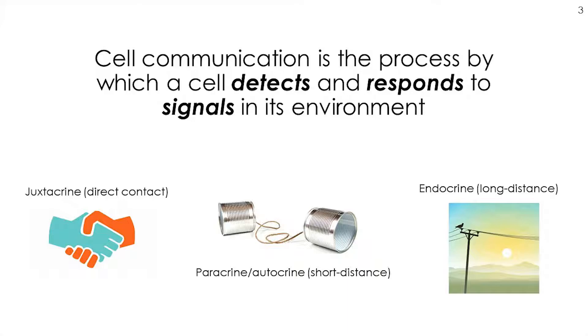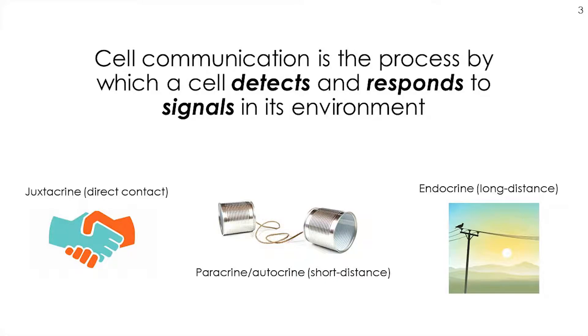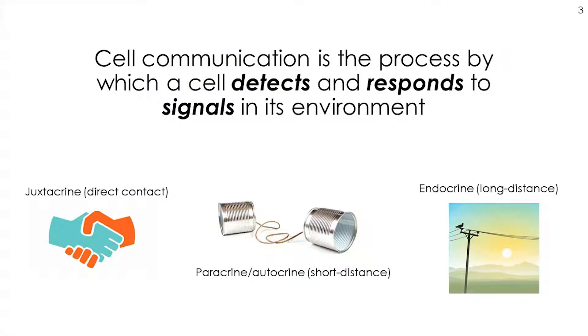Juxtacrine or direct contact is one way that cells communicate—two cells holding hands passing chemical cues through direct contact. Paracrine or autocrine, illustrated by the tin can phone, involves cells secreting chemicals that diffuse to neighboring cells. Endocrine transport is our long distance phone call version, where cells secrete chemicals into the bloodstream that get carried throughout the body.